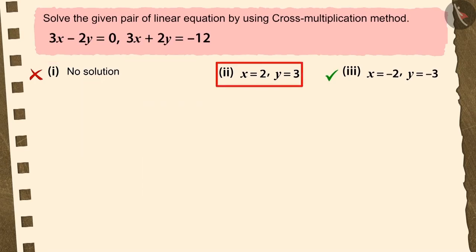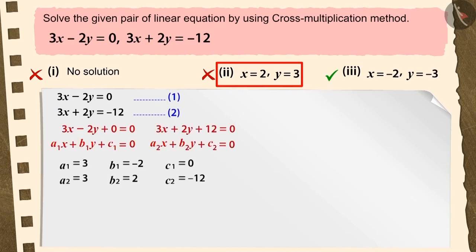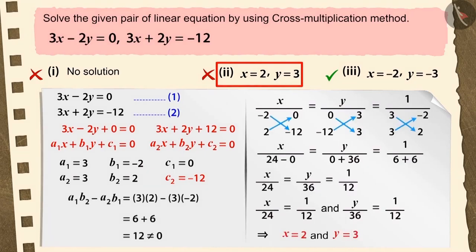If you have chosen option 2, it's also a good try, but this is also an incorrect answer because you didn't write the given equations in their general form and as a result you considered the value of c2 as minus 12 and solved the question further, which became the reason for your answer being incorrect.